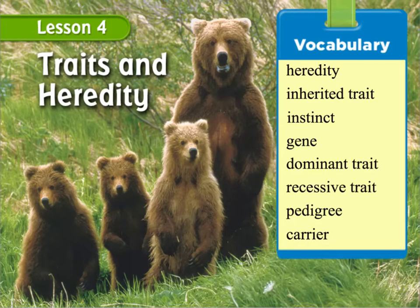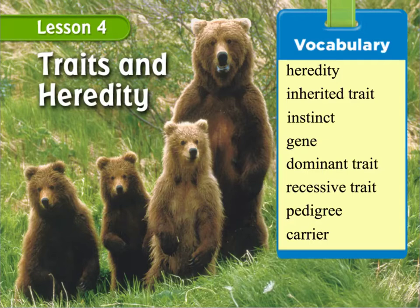This is lesson four, and this is the final lesson in our unit over parent and offspring for fifth grade. This lesson is titled Traits and Heredity. In this lesson, you're going to hear the following vocabulary: heredity, inherited trait, instinct, gene, dominant trait, recessive trait, pedigree, and carrier. Let's get to it.